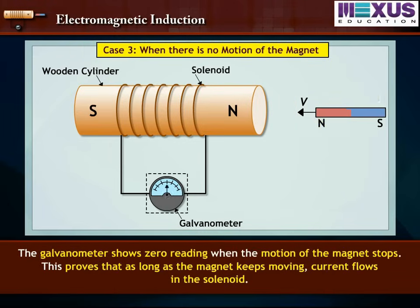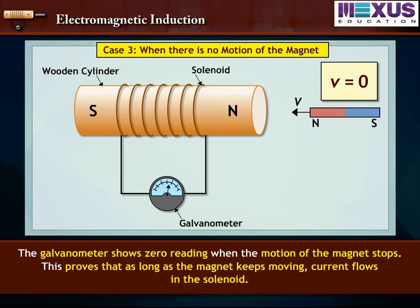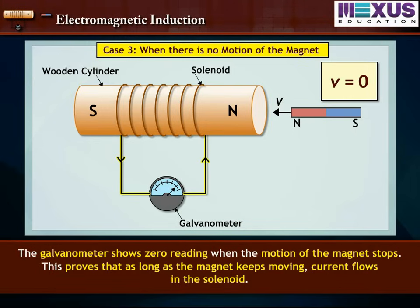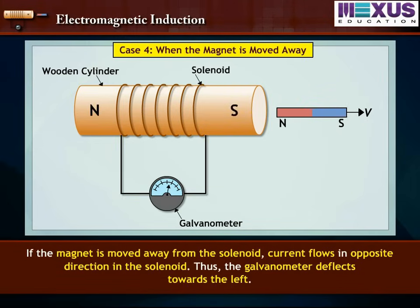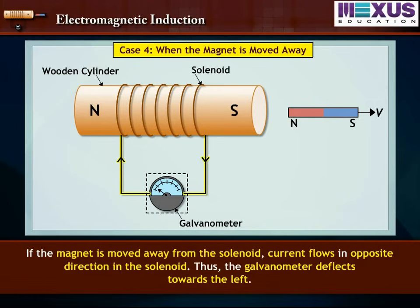The galvanometer shows 0 reading when the motion of the magnet stops. This proves that as long as the magnet keeps moving, current flows in the solenoid. If the magnet is moved away from the solenoid, current flows in the opposite direction, and the galvanometer deflects towards the left.